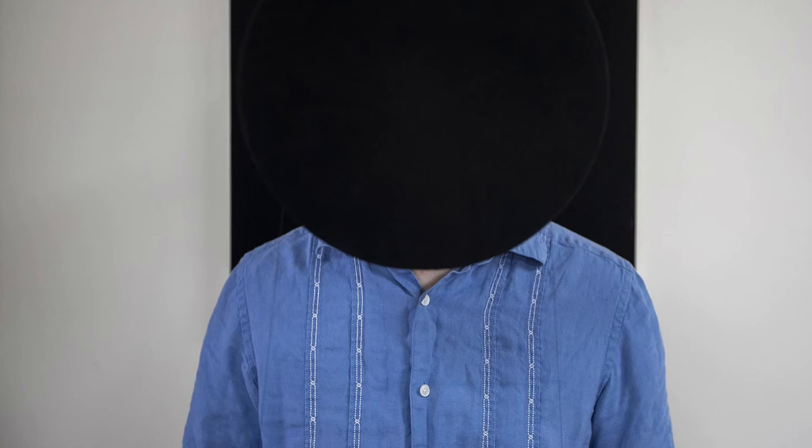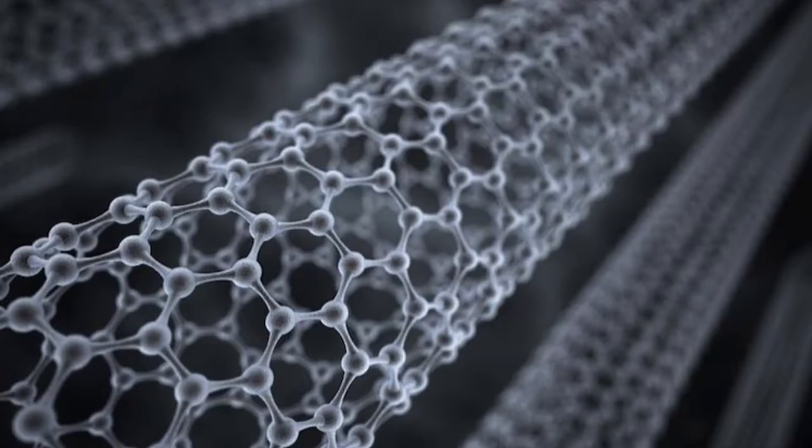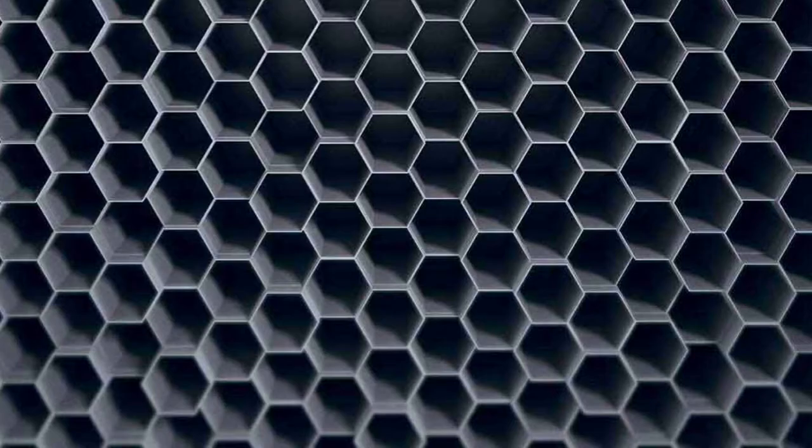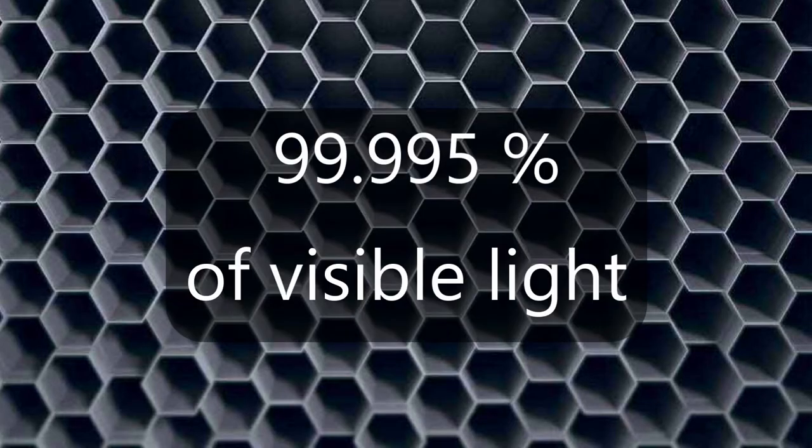This material, which is made from vertically aligned carbon nanotubes grown on chlorine-etched aluminum foil, can absorb 99.995% of visible light.